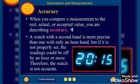When you compare a measurement to the real or actual or accepted value, you are describing the accuracy. A watch with a second hand is more precise than one with only an hour hand, but if it is not properly set, the readings could be off by an hour or more. Therefore, the watch is not accurate. If I say, how long is bus stand from here? I think it is 2.3 km. And when I see, yes, it is exact this. This is called accuracy.